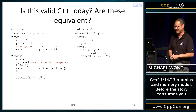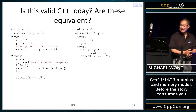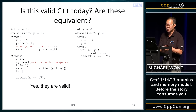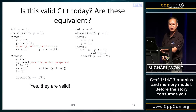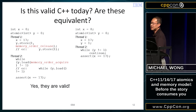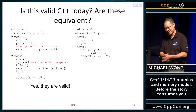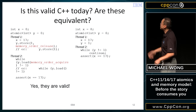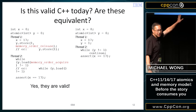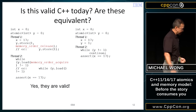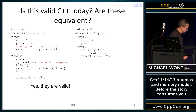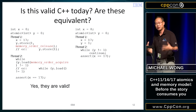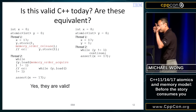Enough motherhood and apple pie — let's do a test. Is this valid C++ today, and are these two programs equivalent? Almost immediately, any time you're asked questions like that at a presentation, it's a rhetorical question. In this case, yes — they are valid C++ today. They differ slightly: one uses a free function syntax with memory ordering, the other uses natural C++ syntax, and yet both are atomic operations. The key is that they both have an atomic variable Y.